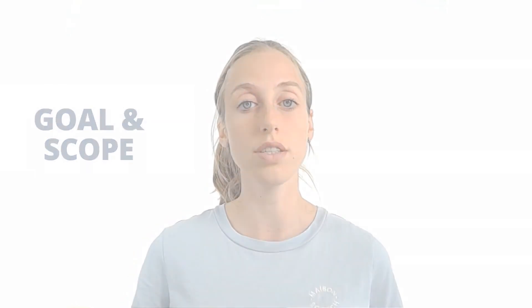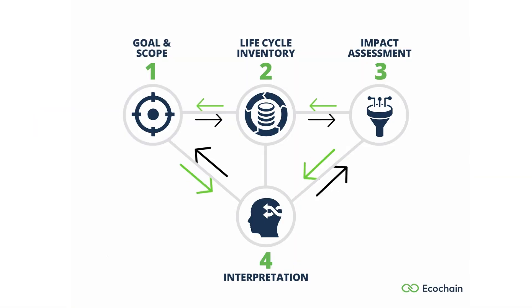So determining the functional unit is part of the goal and scope phase, the first phase of your LCA. So in this phase, you determine what the goal of your LCA is, so what you want to achieve, and also how you want to achieve this goal.